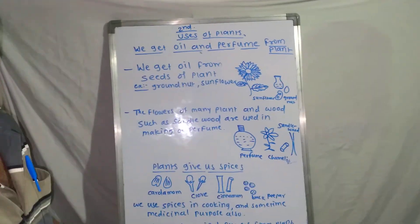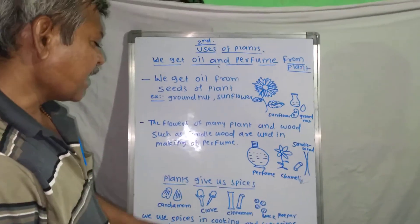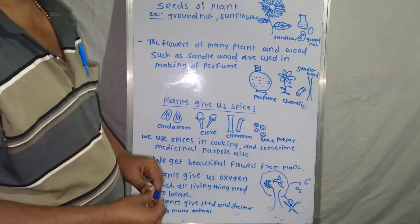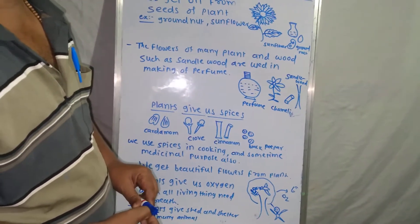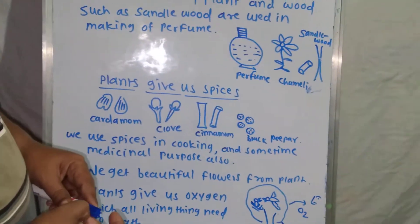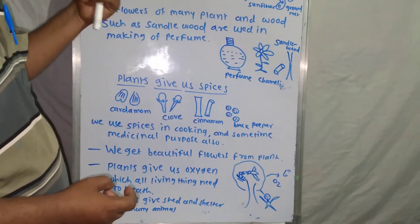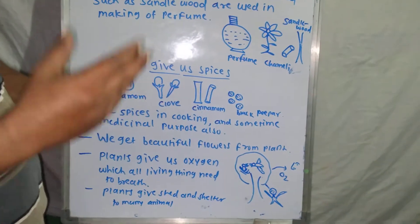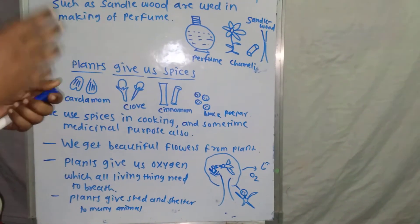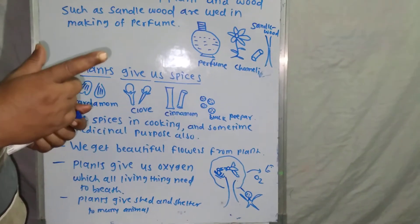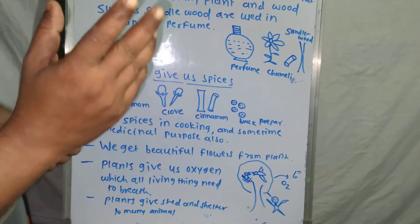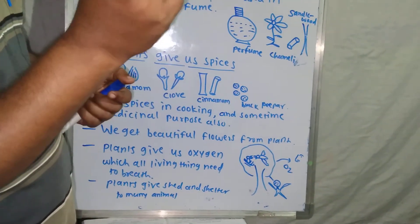Spices have medicinal value and also increase the flavor of food. Lastly, the most important use of the plant is that plants give us oxygen for breathing. It is the most essential gift given by the plant to us, because without oxygen we cannot survive even for one minute. Plants provide a continuous supply of oxygen, which is necessary for all animals on land to survive.